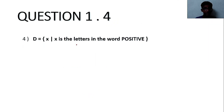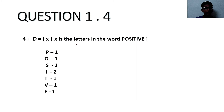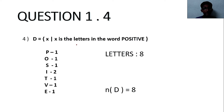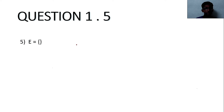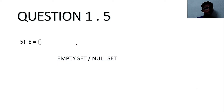D = {x | x is the letters in the word 'positive'}. There is 1 P, 1 O, 1 S, 2 I's, 1 T, 1 V, and 1 E in the word positive, so there are eight letters, and the cardinal number of D is equal to 8. E is the empty set — there are no elements, so the cardinal number of E is 0, because an empty set or null set has a cardinality of 0.